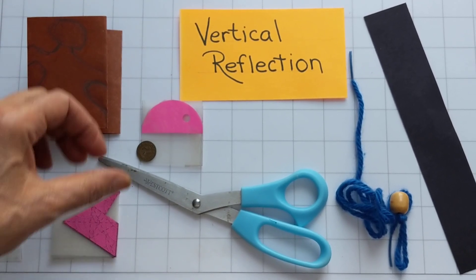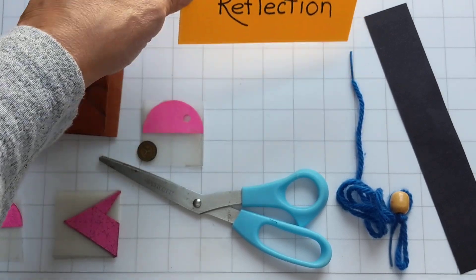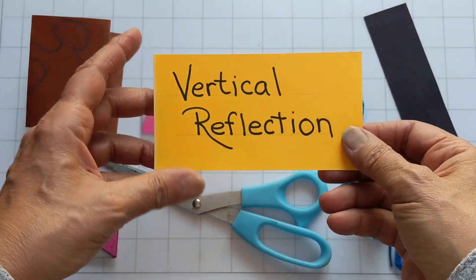I'm going to be talking about vertical reflection in regards to the frieze groups, frieze symmetry.